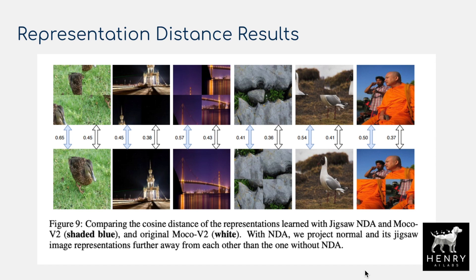A particularly exciting set of results shows the effect of NDA on contrastive representation learning. At the end of a contrastive learning framework, we have a similarity score between pairs of images via cosine similarity on joint embeddings. The plot shows original images paired with their jigsaw augmentations — pairs where the global structure has been completely corrupted. The NDA-learned representations show scores of 0.65 versus 0.45 for the original, meaning the model has learned to push these out-of-distribution augmented images much farther apart in representation space.